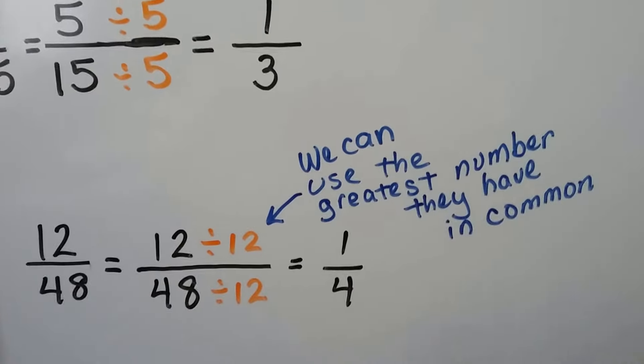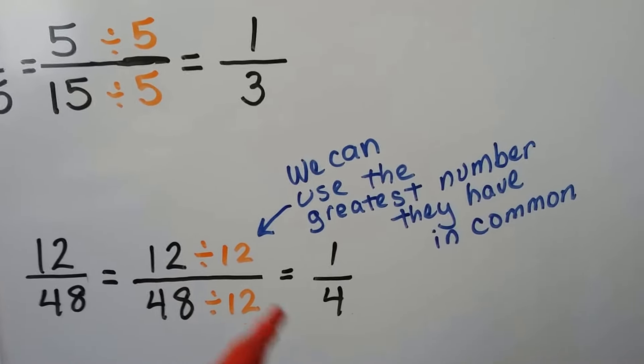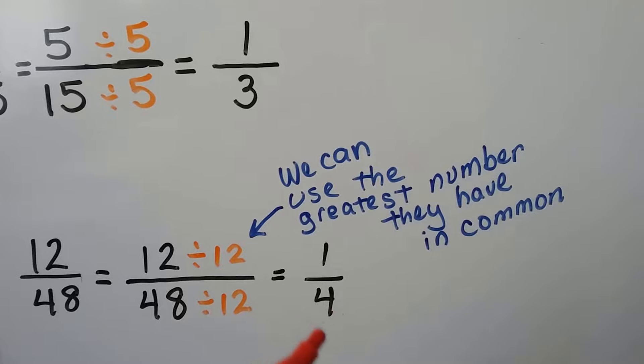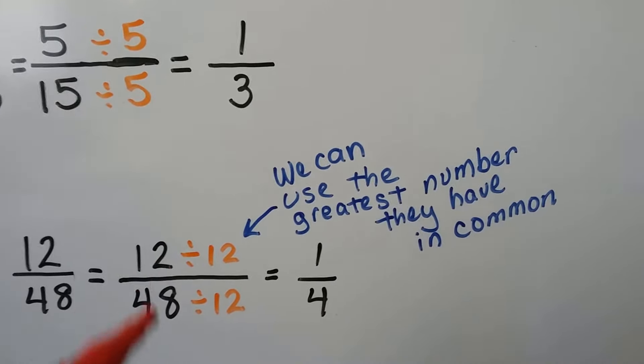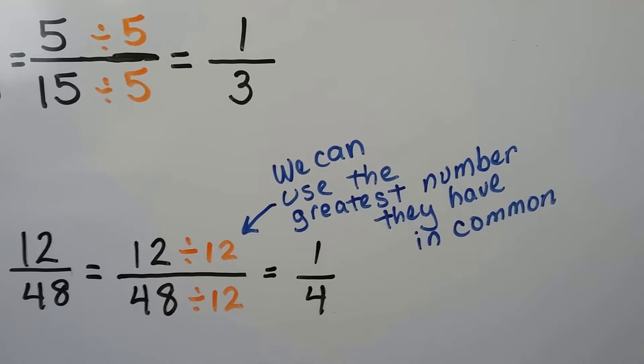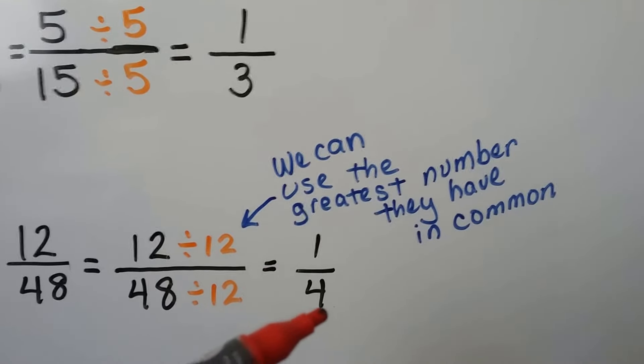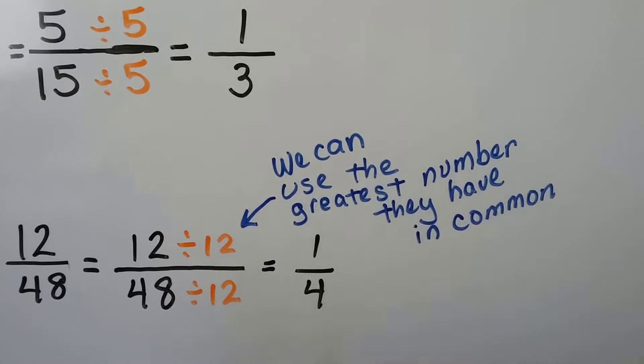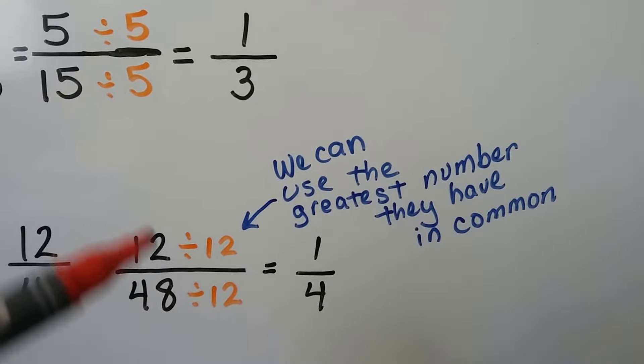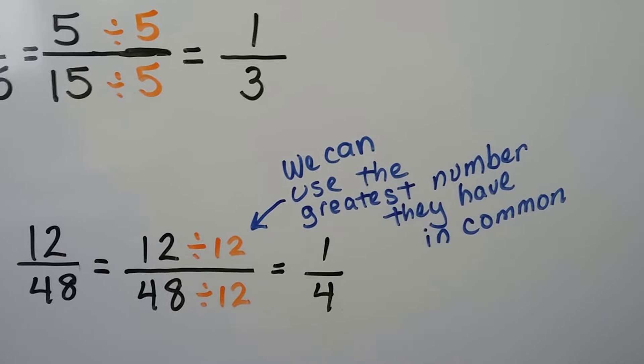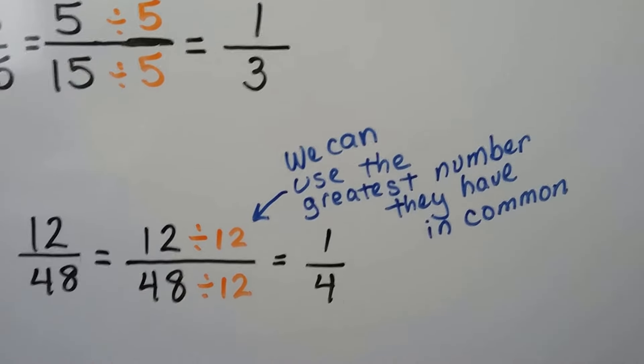We have 12 forty-eighths. We can divide the 12 by a 12 and the 48 by a 12. That'll give us 1 fourth. We can also remember to use the greatest number that both of these have in common. That's where knowing your multiplication tables is going to help you. Because you're going to know that 12 times 4 is 48. That's going to help you go quicker on the test. But using that greatest number, that biggest number that they have in common, it's going to help you save time.